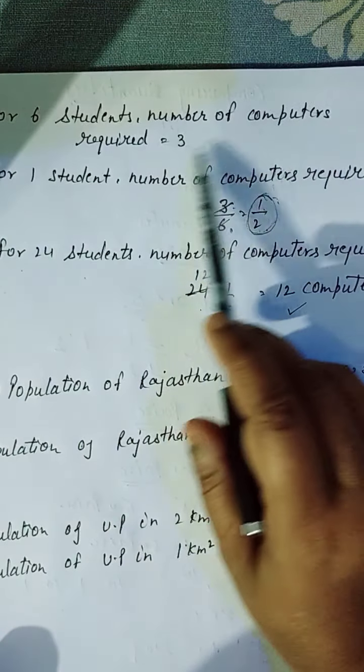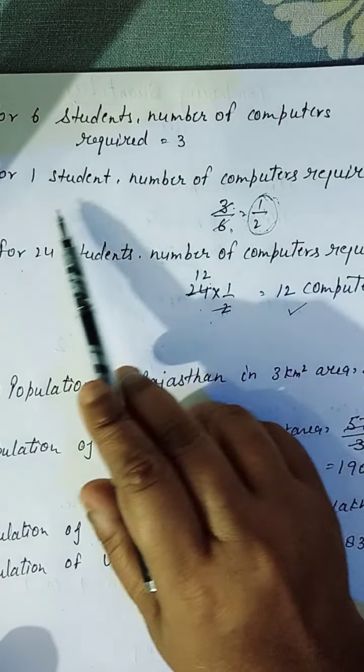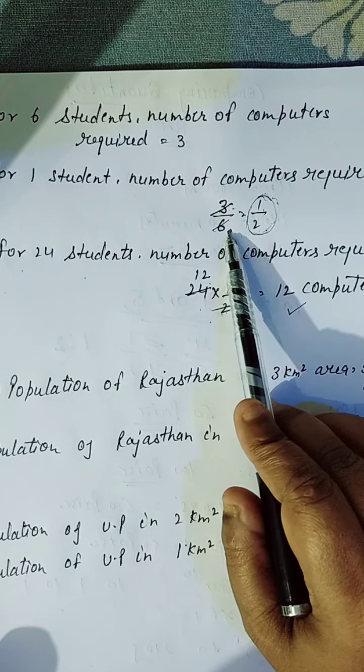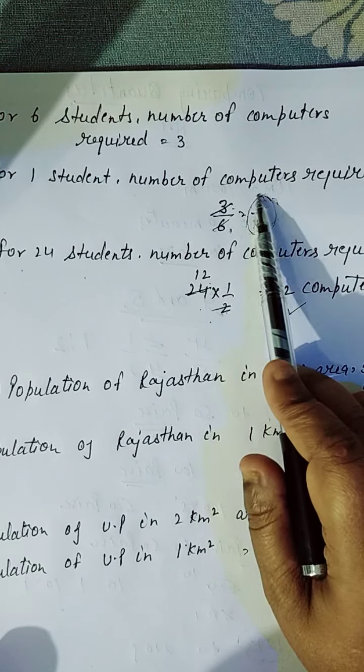Yeh six students ke paas computers kitne? Three. To, one student ke paas kitna hooghe? Hamein se kya karenghe? Divide kar denghe. To, hamein raha kitna aa gaya? One by two.